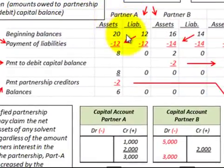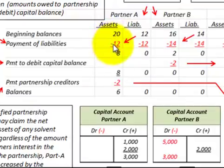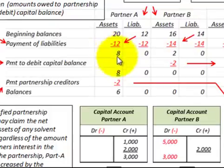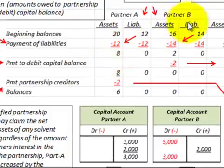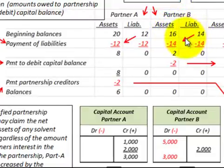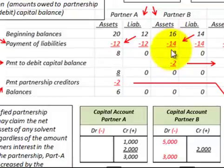Looking at Partner A: assets of $20,000 minus liabilities of $12,000 gives a net asset balance of $8,000. For Partner B: assets of $16,000 minus liabilities of $14,000 gives a net asset balance of $2,000.